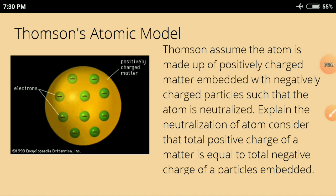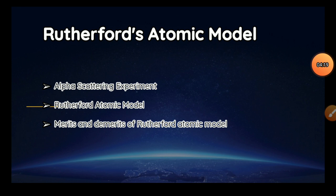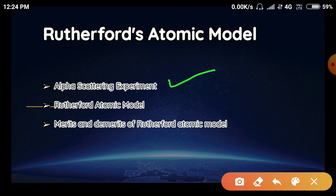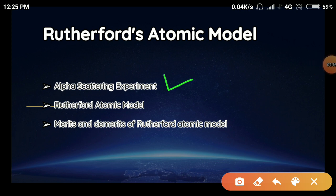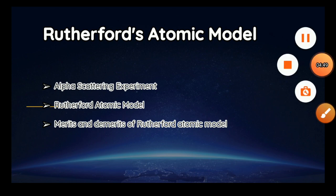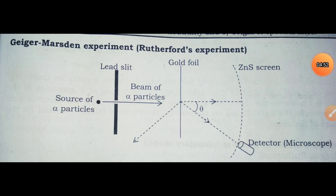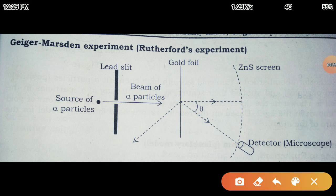To overcome all these difficulties, a new model was proposed — the Rutherford atomic model. This alpha scattering experiment is also called the Geiger-Marsden experiment.